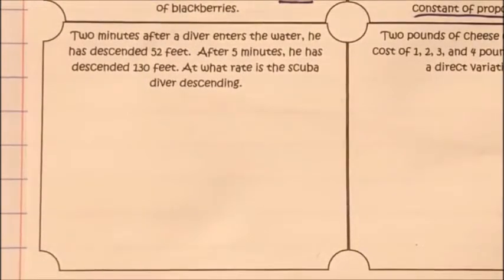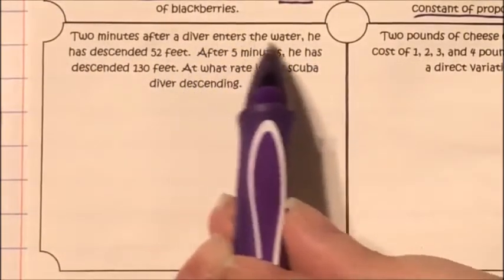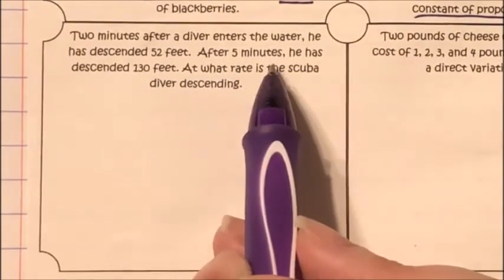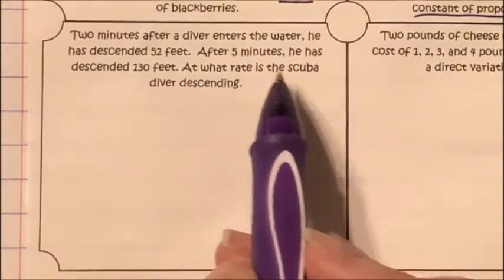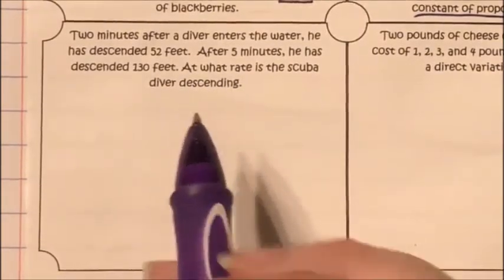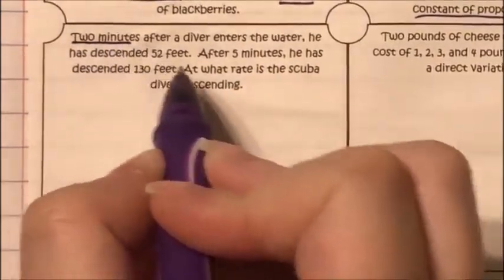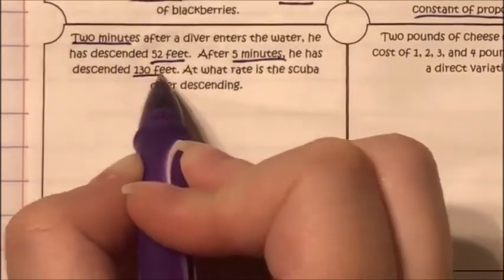Now that you've had a chance to look at the try-it problems, let's look at them together. The first try-it problem says: two minutes after a diver enters the water, he has descended 52 feet. After five minutes, he has descended 130 feet. At what rate is the scuba diver descending? The key information: 2 minutes and 52 feet; 5 minutes and 130 feet.